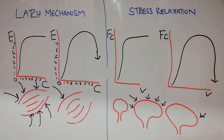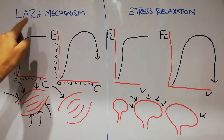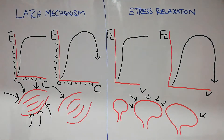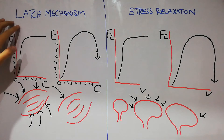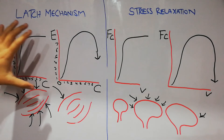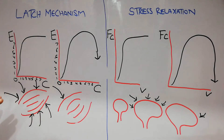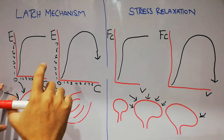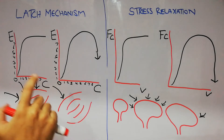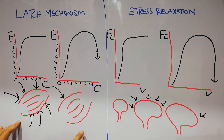In this lecture we are going to discuss the latch mechanism and stress relaxation. These are two phenomena that are related with the smooth muscles. The latch mechanism is basically the decrease in the consumption of energy and the decrease in the excitation needed for the smooth muscle after it has been contracted.